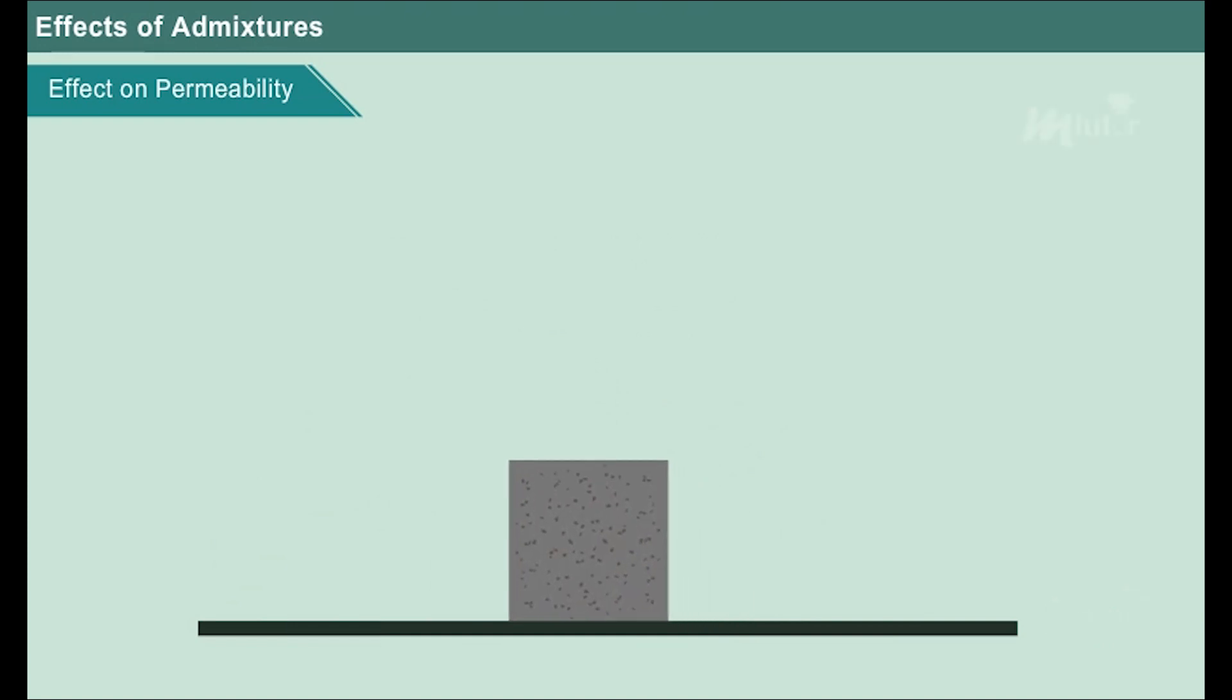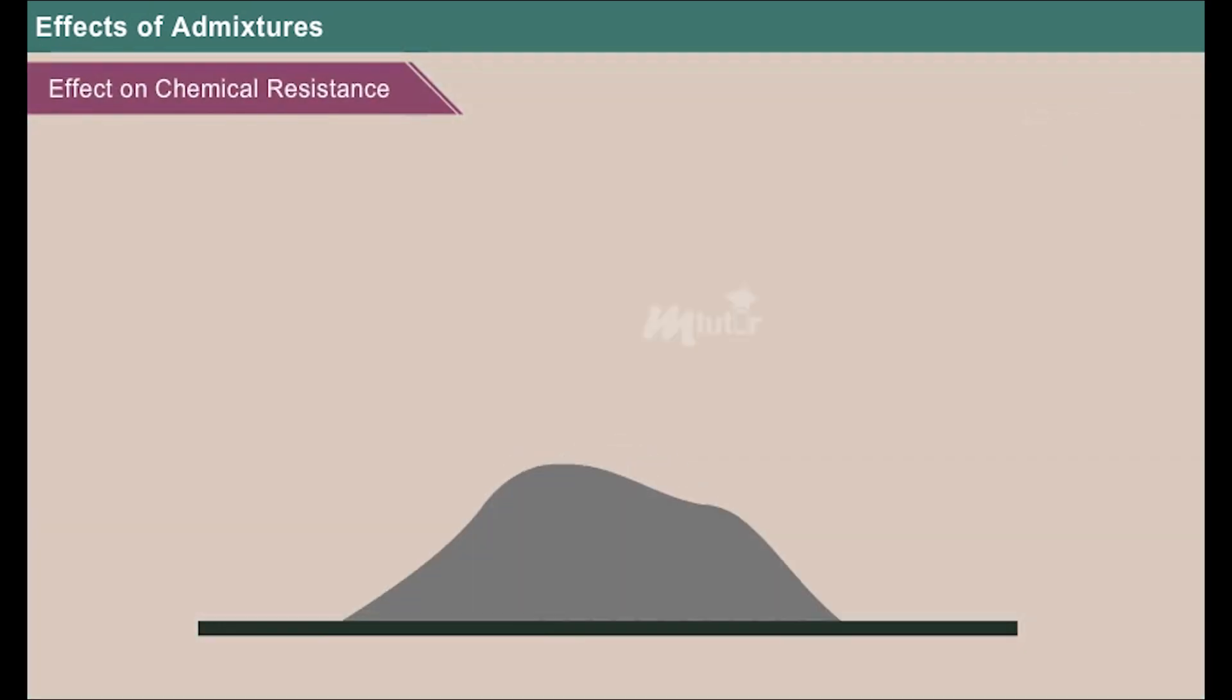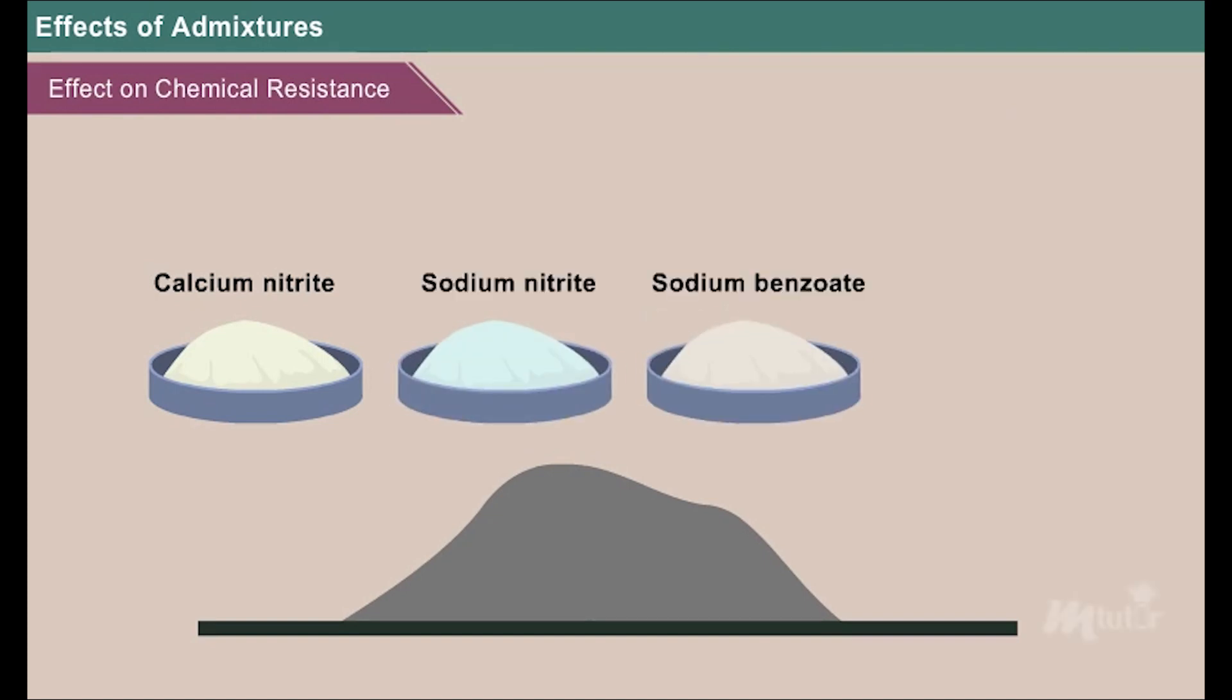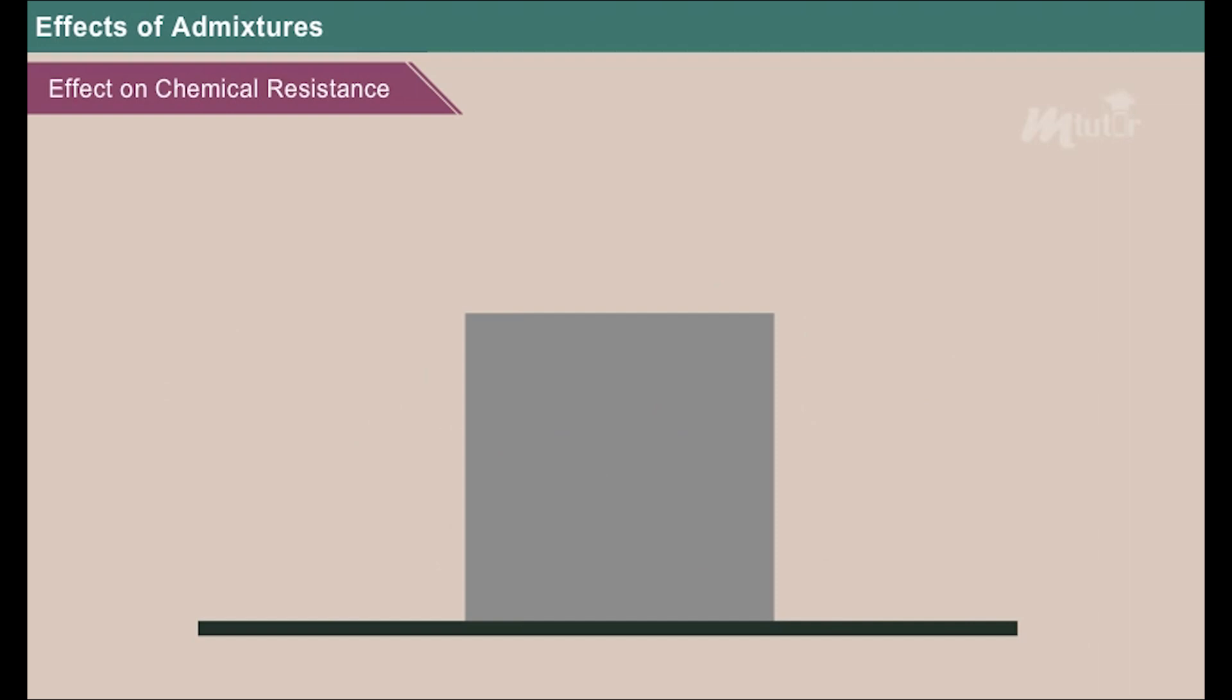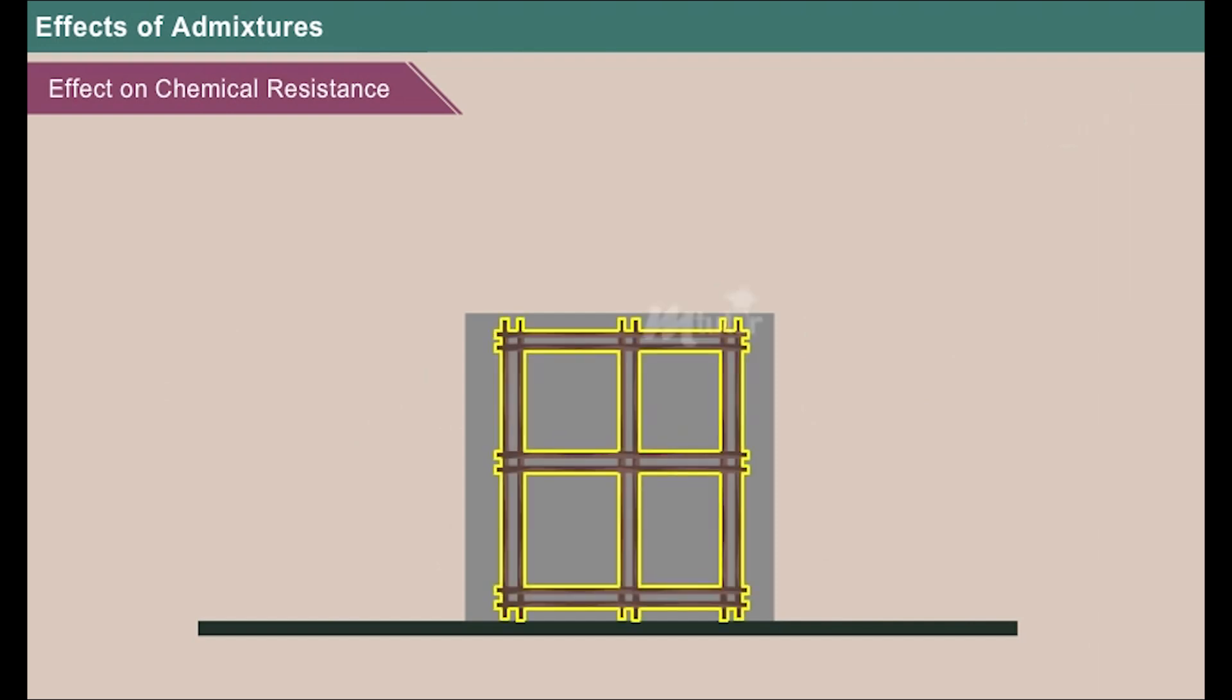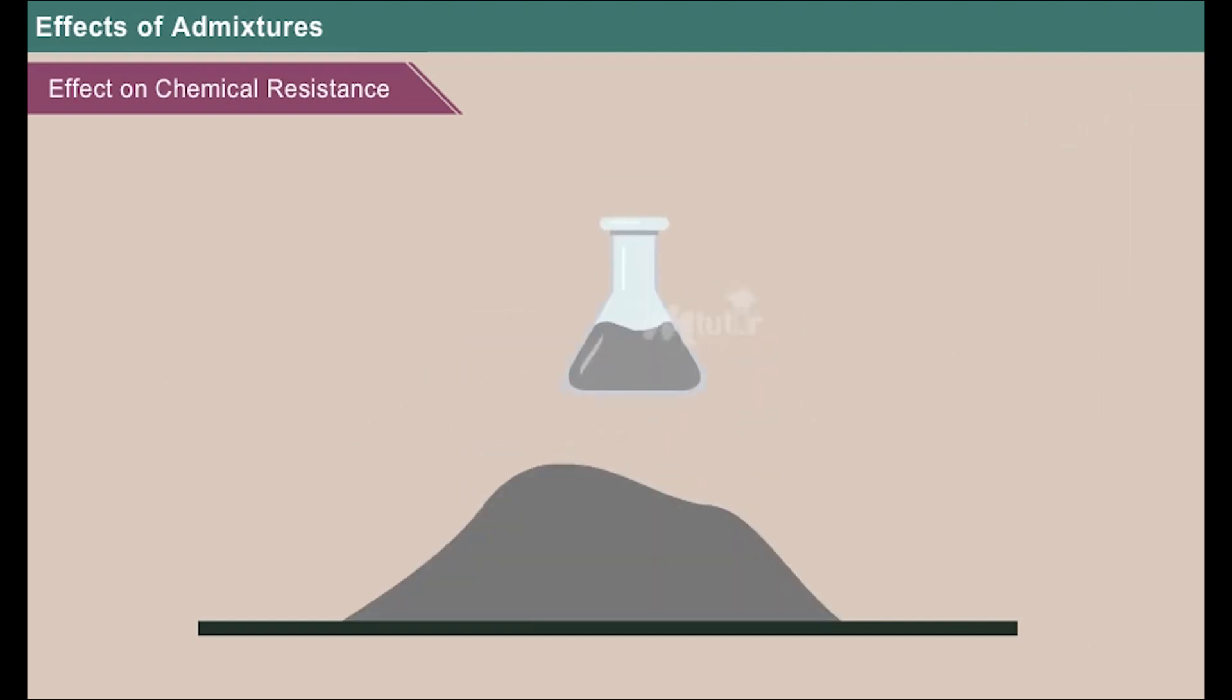Effect on chemical resistance: Calcium nitrite, sodium nitrite, sodium benzoate, and fluorosilicates are the corrosion inhibiting admixtures used in reducing the corrosion of reinforcing steel in concrete. By adding fly ash to the concrete we can prevent the sulfate attack to a greater extent.